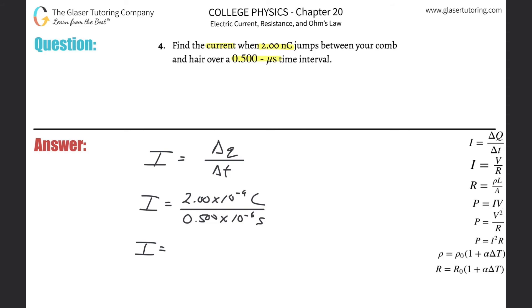And we get a value then of 4.00 times 10 to the minus three, and that's coulombs per second or AKA amps. All right.